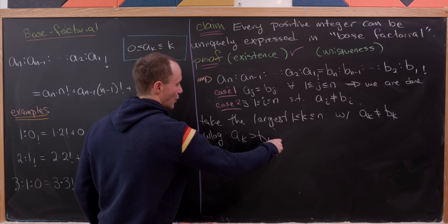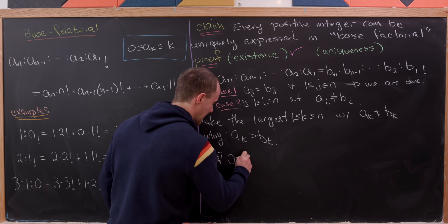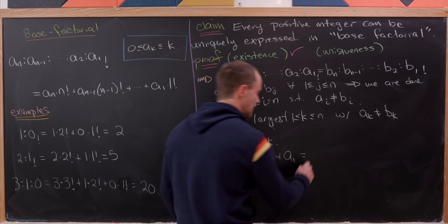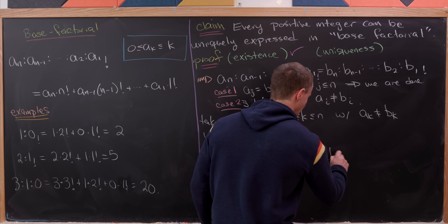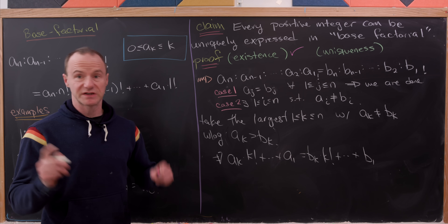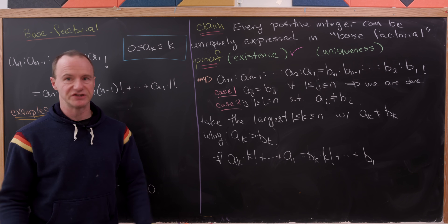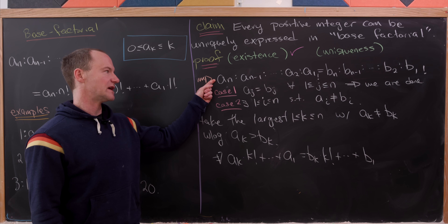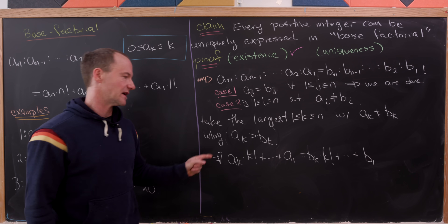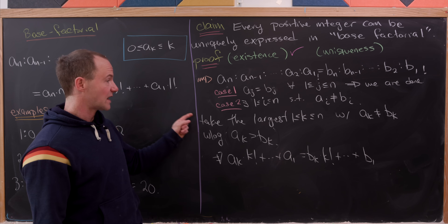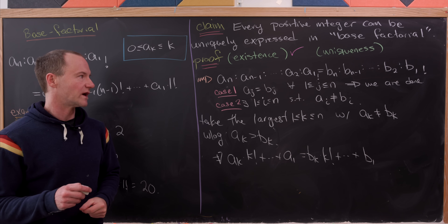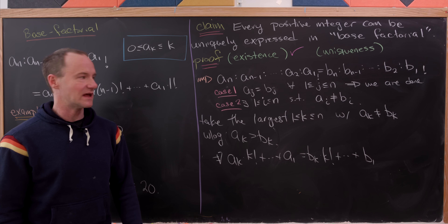Now let's observe what we have. We have a_k times k! plus all the way down to a_1 equals b_k times k! all the way down to b_1 — and that's from subtracting off all of the higher digits, which are exactly the same since k is the largest point where we have inequality.